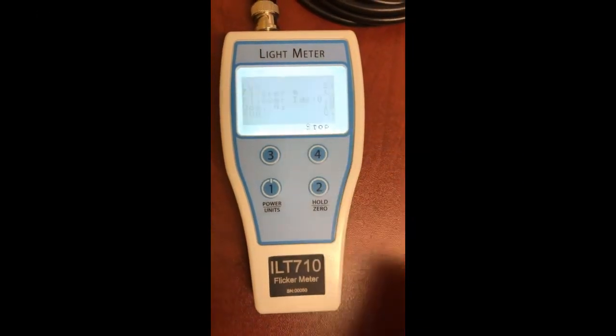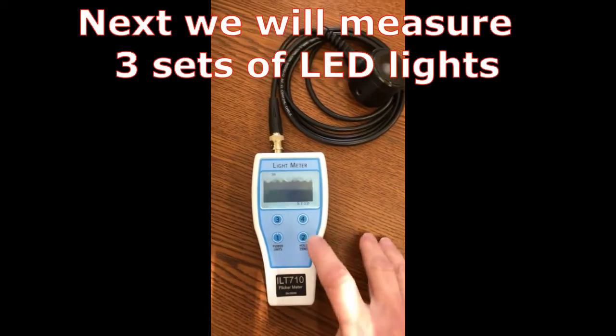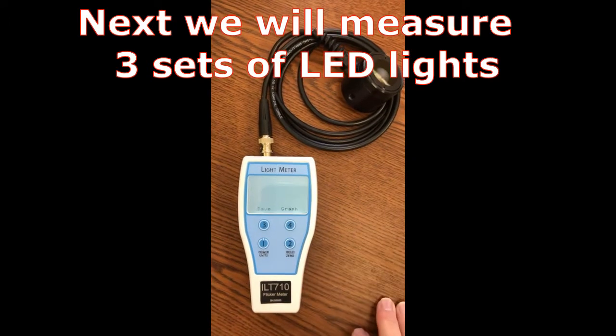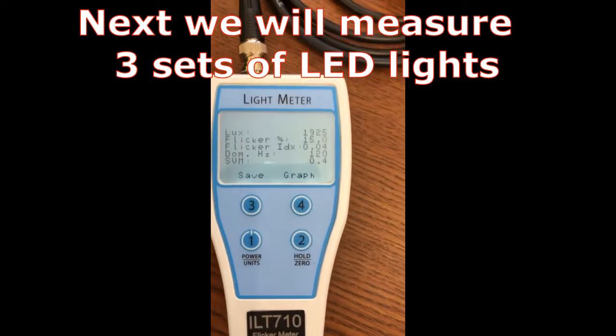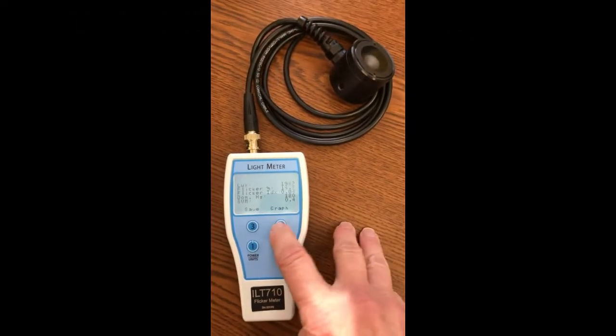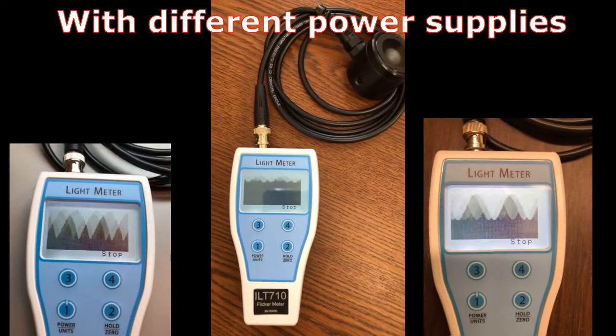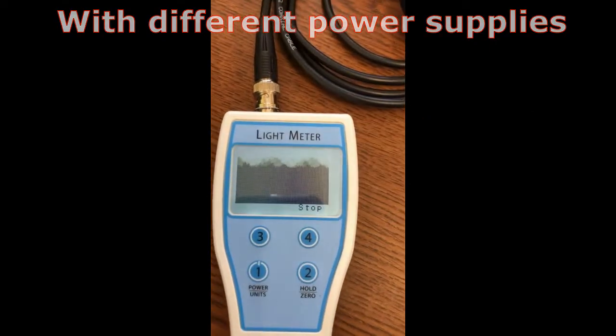The analytical data includes readings in lux, percent flicker, flicker index, frequency, SVM, and visuals include a graphical display of the intensity over time. The intensity over time is a fast-moving graphical representation of the variation between the waves of light depicting both modulation shape and modulation depth.